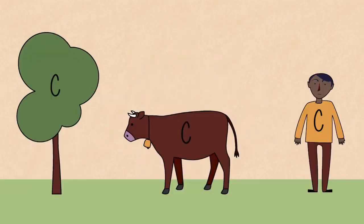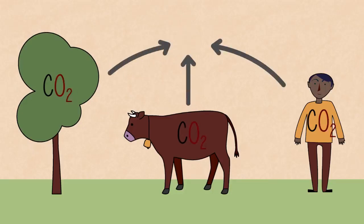In order to fuel these living processes, plants and animals take back oxygen from the air and rejoin it with the carbon, releasing carbon dioxide back into the environment.